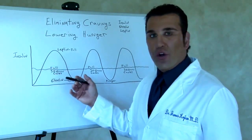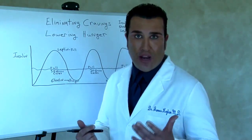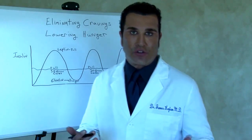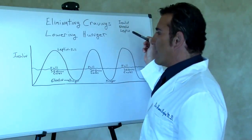So this graph shows how these three hormones interact in the body to create hunger and to create fullness. The three hormones are insulin, ghrelin, and leptin.